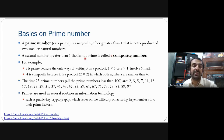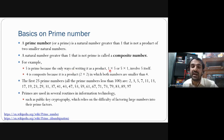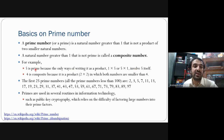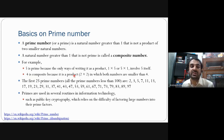For example, five is a prime number because there is only one way of writing its product: one times five and five times one, where five itself is part of the factor. Four is a composite number because it is expressible as two times two.